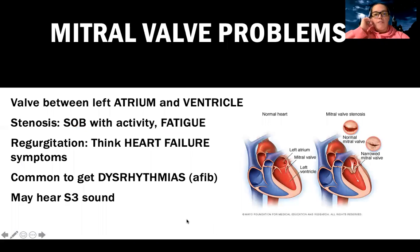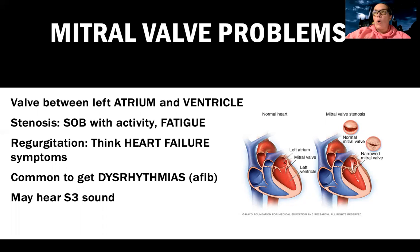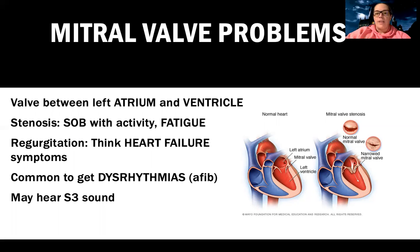The mitral valve sits between the left atrium and left ventricle. With mitral stenosis — where it's narrow like a tiny funnel that can't get blood through — patients usually complain of shortness of breath with activity and fatigue. All valve problems can look similar, but essentially these patients aren't getting blood pushed from the left atrium to the left ventricle adequately.